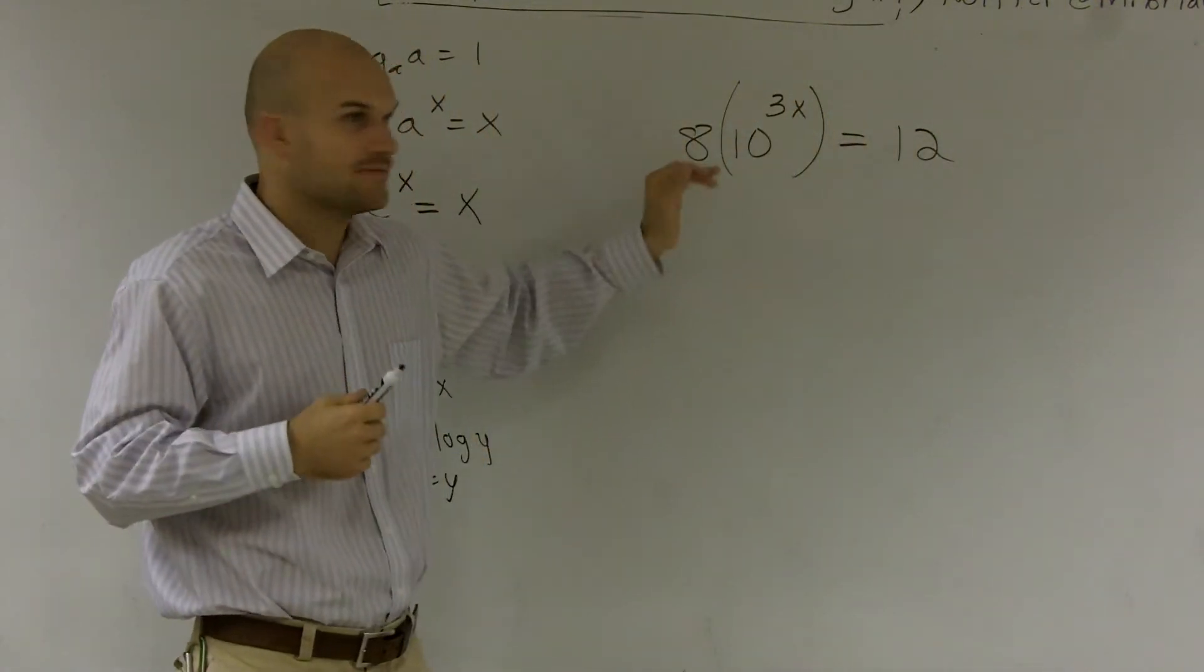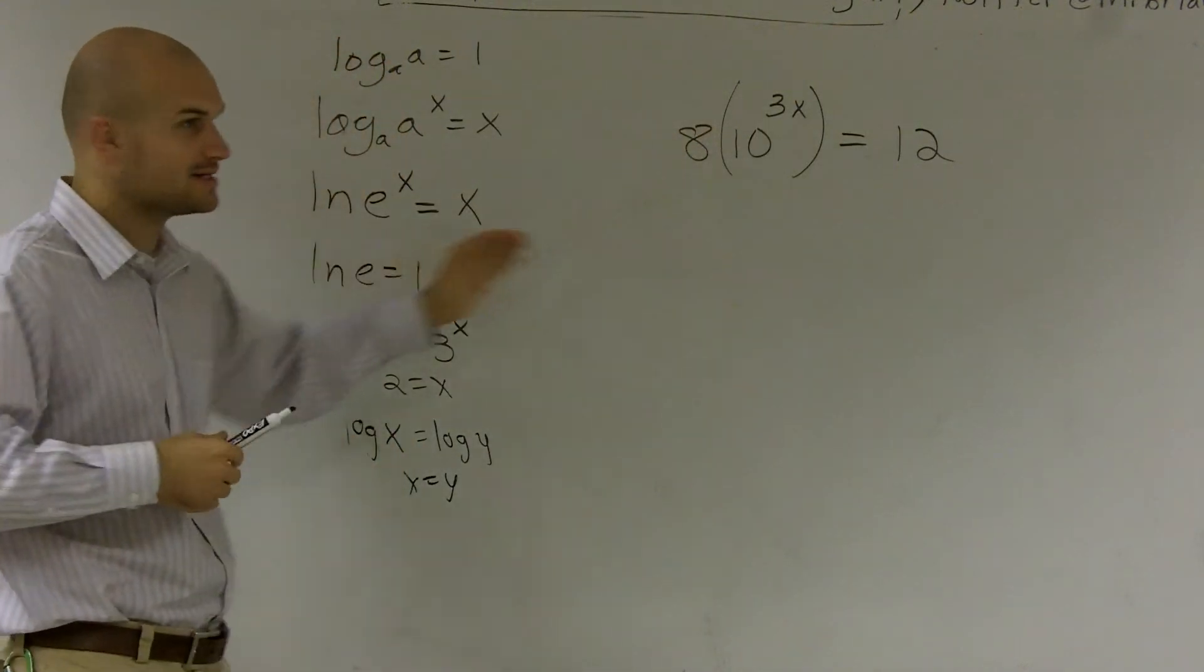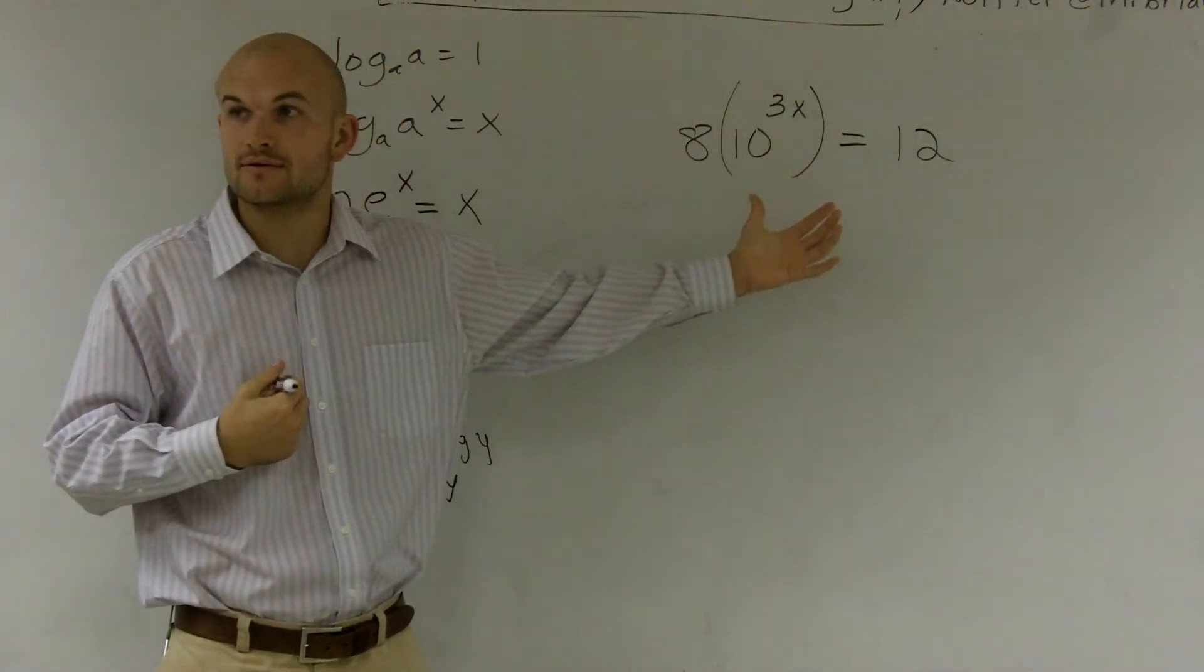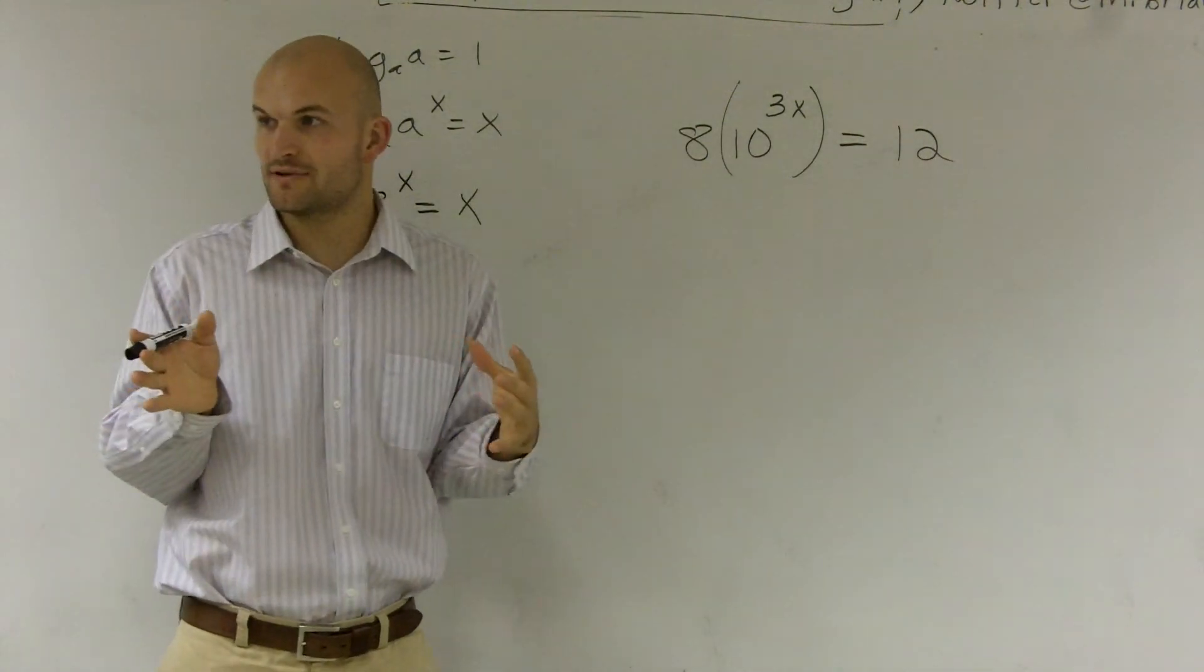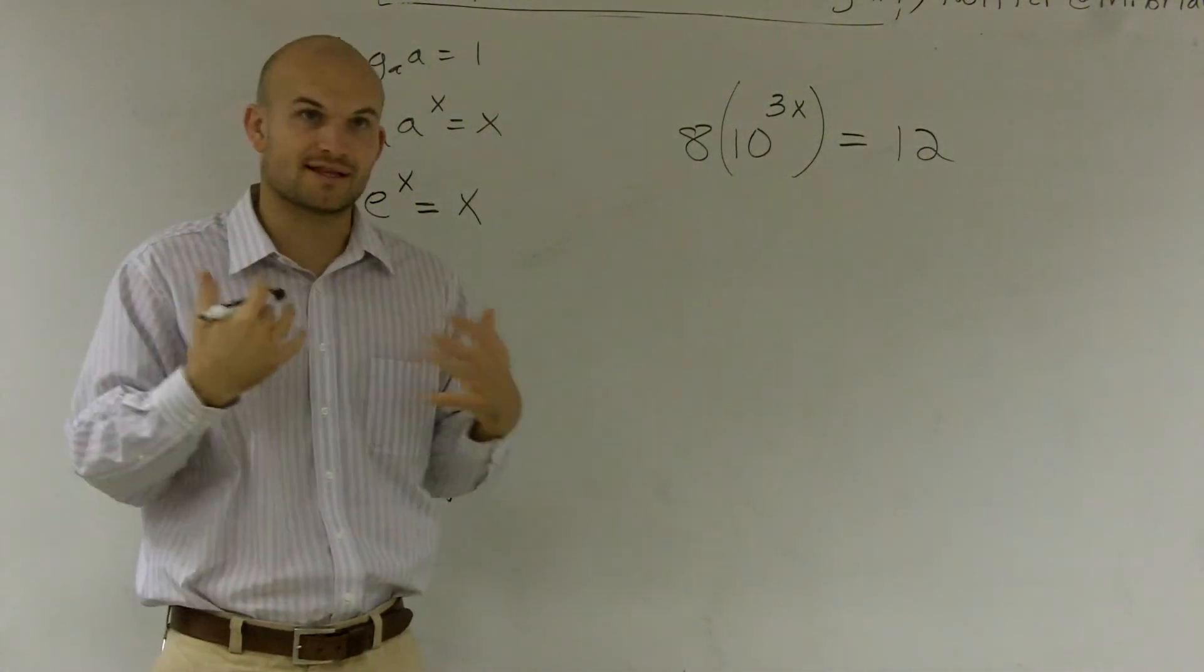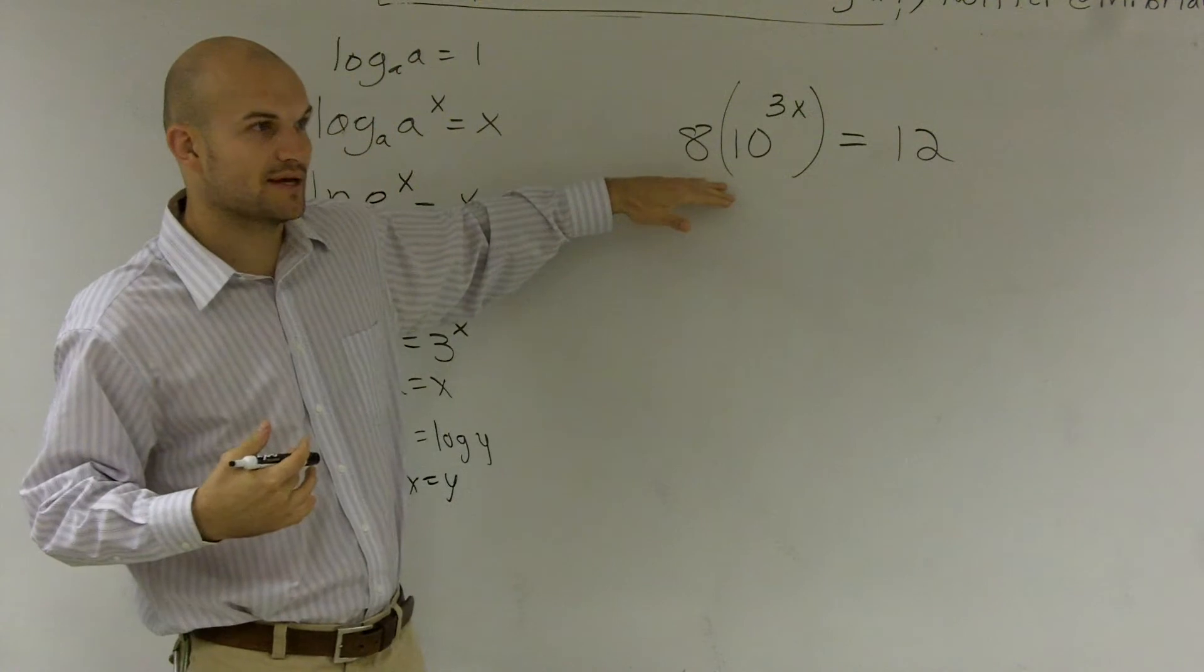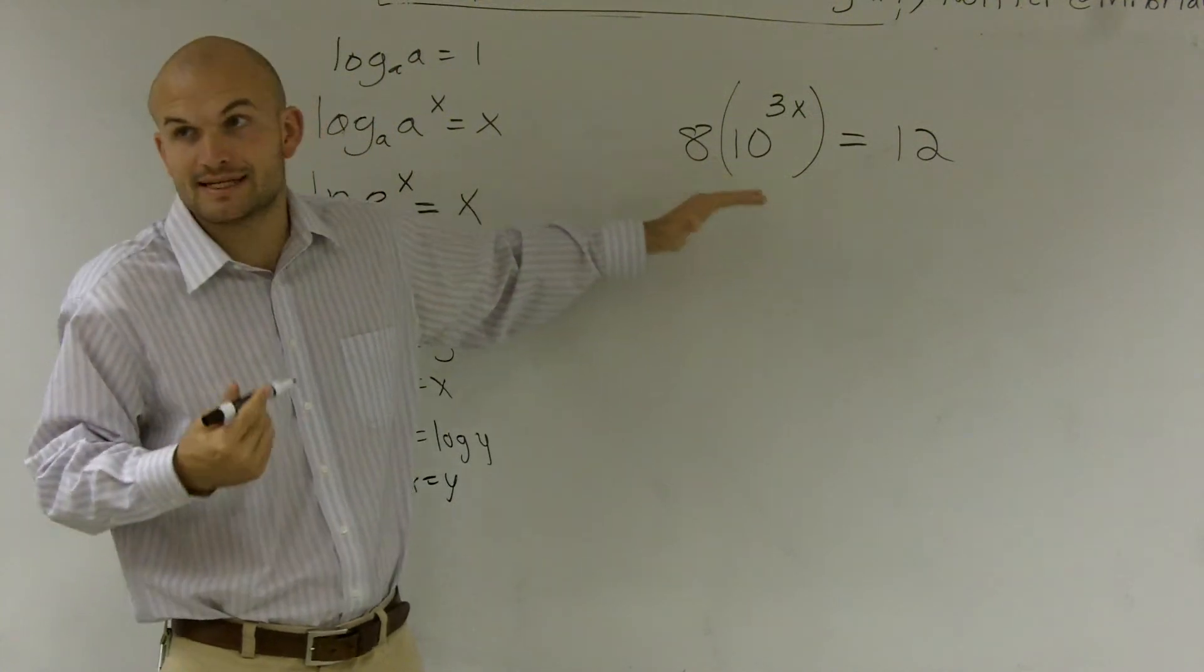First of all, we have this 8 here. We can't utilize any of these properties unless our exponent is isolated, right? Remember when we had that e to the x for the first problem I did? I had to get rid of everything that's on that side. Here's the same thing. Now I just have a multiplication that I need to get rid of.